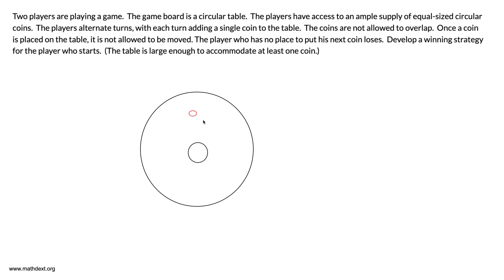Then whatever the second player does, the first player copies. Like if the second player places his coin there, the first player can place his coin on the other side. And if the second player places the coin over here, the first player places his coin over here.